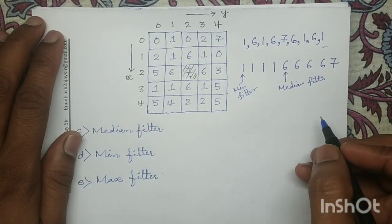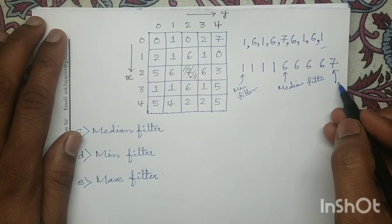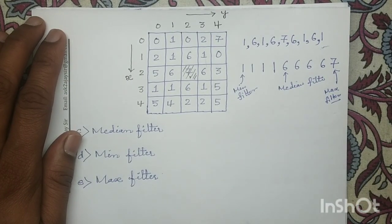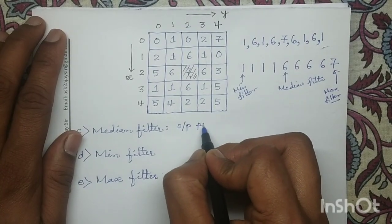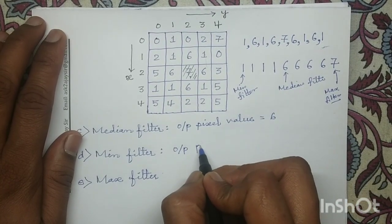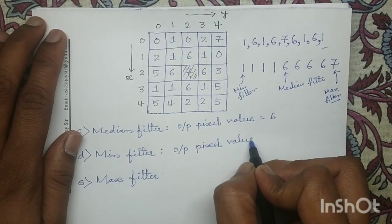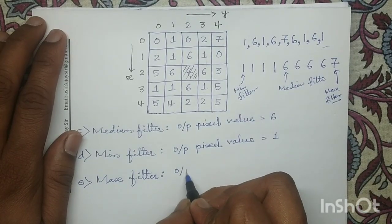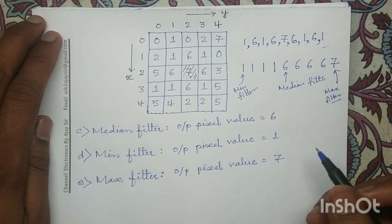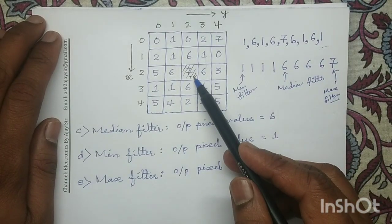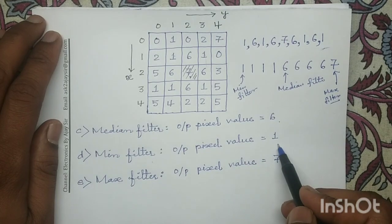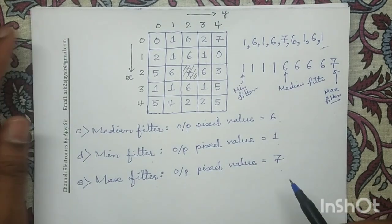For the maximum filter, we target the maximum value in the series, which is 7. So the median filter output pixel value is 6, the minimum filter output pixel value is 1, and the maximum filter output pixel value is 7. In summary, the new pixel value at location (2,2): applying the 3×3 median filter gives 6, the 3×3 minimum filter gives 1, and the 3×3 maximum filter gives 7. Thank you.